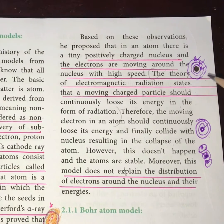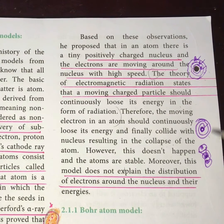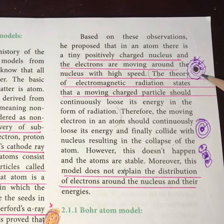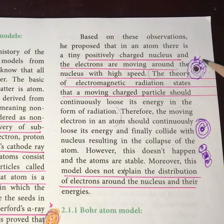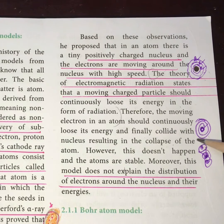So, the failure of the Rutherford model is that it could not explain with what energy or force the electrons are circulating in a path. That is the failure of the Rutherford experiment.